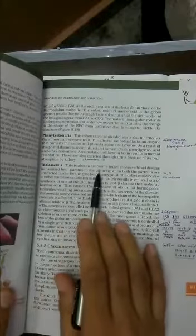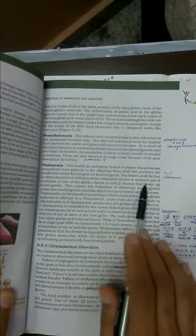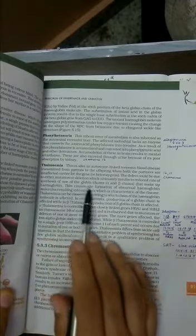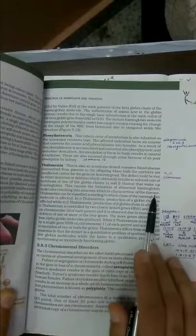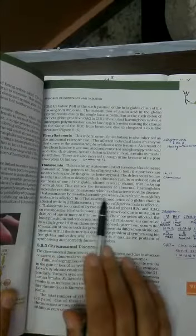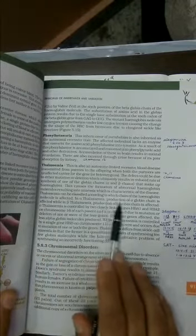Let's quickly go through this one in NCERT. It's a huge paragraph and important for your board exam. It is also an autosomal linked recessive disease transmitted in the same manner from the infected carrier to the next generation. The defect could be due to either mutation or deletion which ultimately results in reduced rate of synthesis of one of the globin chains, alpha chain or beta chain that makes the hemoglobin. This causes the formation of abnormal hemoglobin molecule which results into anemia characteristic of the disease. Thalassemia is of two types - alpha thalassemia.